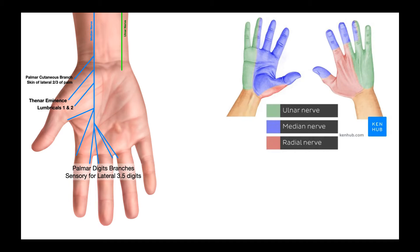Now we're going to switch gears and talk about the ulnar nerve. The ulnar nerve has something similar on both the dorsal and the palmar aspect of the hand. Coming from the ulnar nerve is the dorsal cutaneous branch. Notice it's not on the palmar aspect — it's on the dorsal aspect. This line representing the nerve is a little bit transparent to show that it's on the other side of the hand.